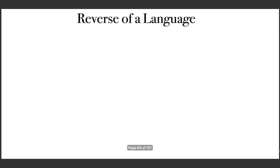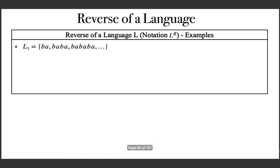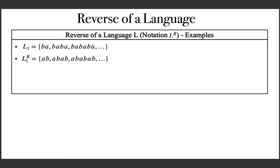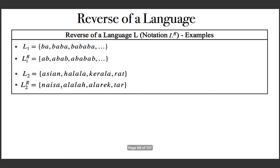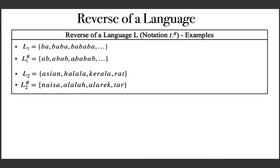We can define the reverse of a language: given a language, its reverse is the set of all string reverses. For language L2 with strings Asian, Halala, Kerala, Rat — the reverse of L2 contains Nisa, Alala, Alarak, and Tar. Formally, the reverse of language L is the set of all X^R such that X is in L.